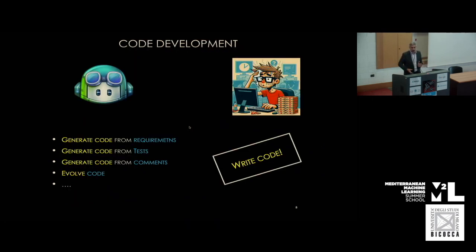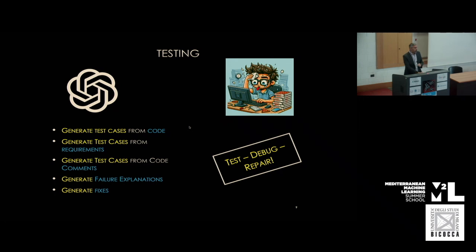This is just about requirements, but we already had a talk today about code generation. Writing code is one of the main tasks software developers do, and we can generate code exploiting diverse inputs like requirements, tests, and comments, or use AI to evolve existing code. In the domain of software quality and testing, we generate test cases to validate software, identify faults that cause failures, and repair programs — all activities where AI can help automate or partially automate.